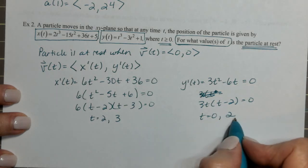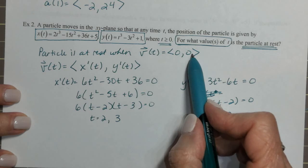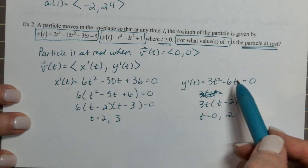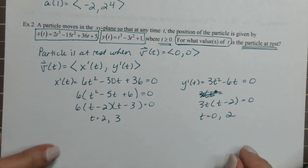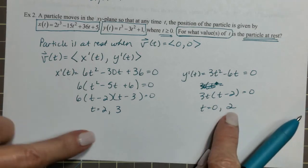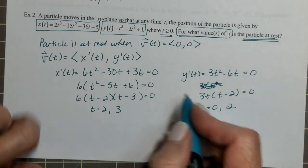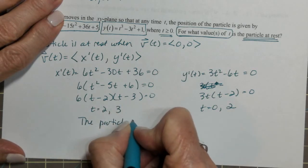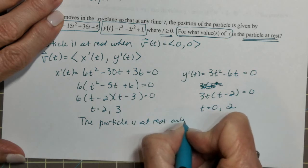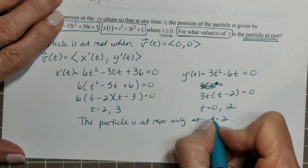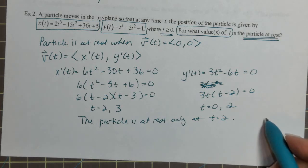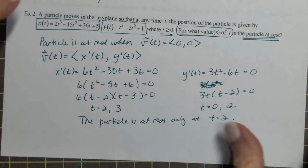So at times 0 and 2, the y component of the velocity vector is 0. We need both the x and y components to be 0. That only happens when the time is 2. So the particle is at rest only at time 2. This could easily be a multiple choice question where one of the wrong choices is 0, 2, and 3 — hopefully you won't be fooled by that.